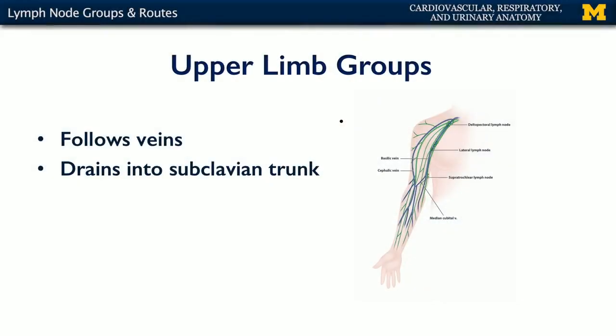The lymphatics of the limbs are relatively simple. For both the upper and the lower limb, they're going to follow the pattern of venous drainage. For the upper limb, lymph nodes are rather sparse — we may have some supratrochlear nodes along the medial border around the elbow.